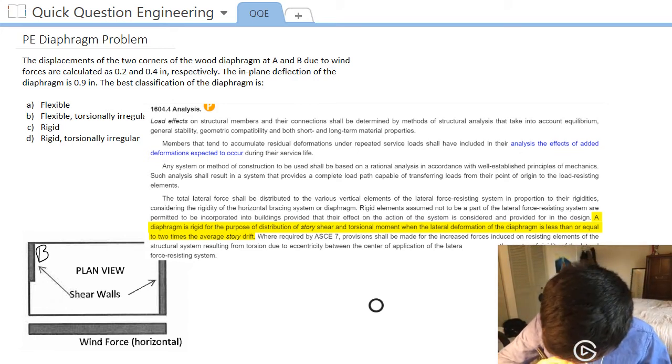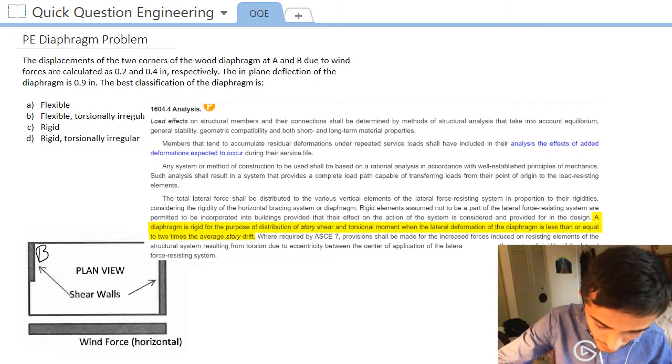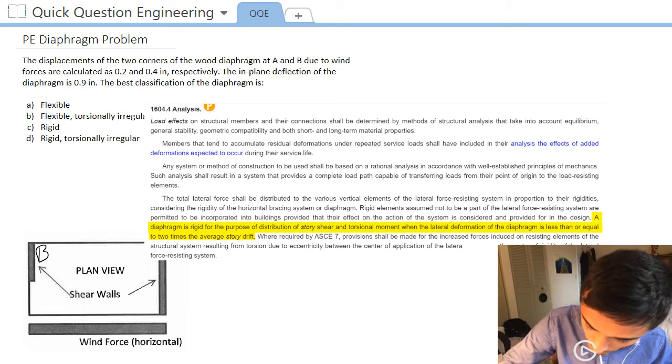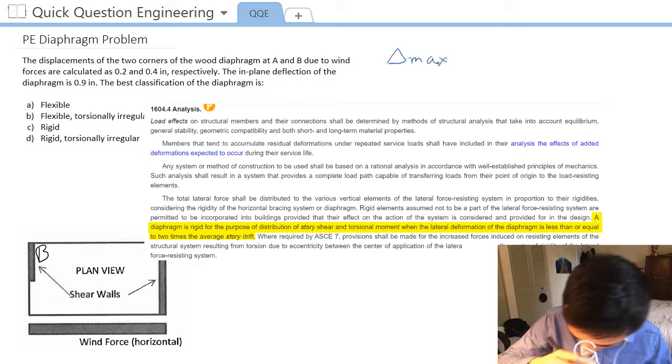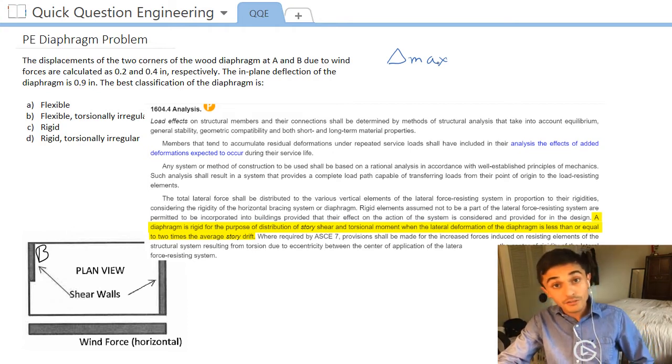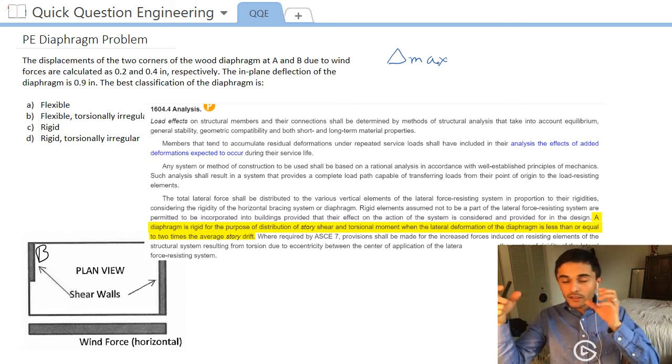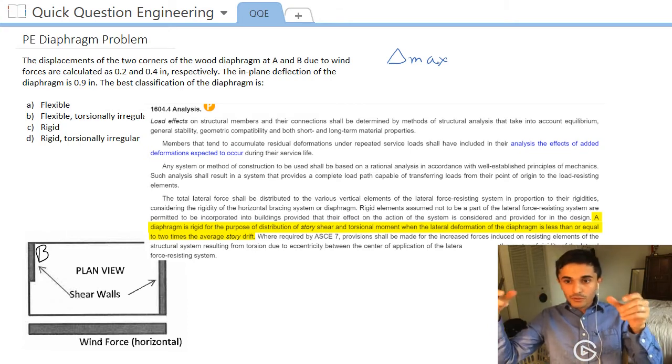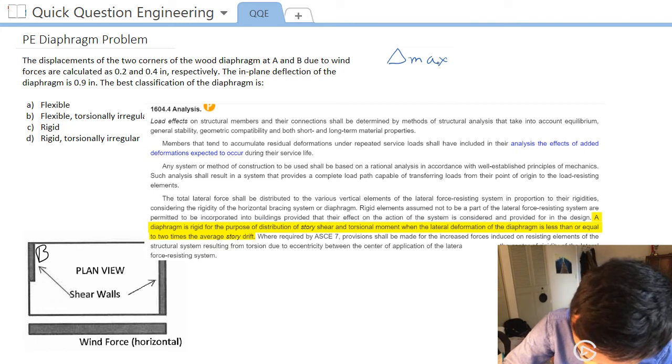So what does that mean? First of all, we need to compare the lateral deformation of the diaphragm. Let's call that delta max. And we need to compare that with two times the average story drift. So it's how much each floor is going to deflect at the shear wall, not at the shear wall, the average between the two shear walls on each floor. So let's call that delta average.